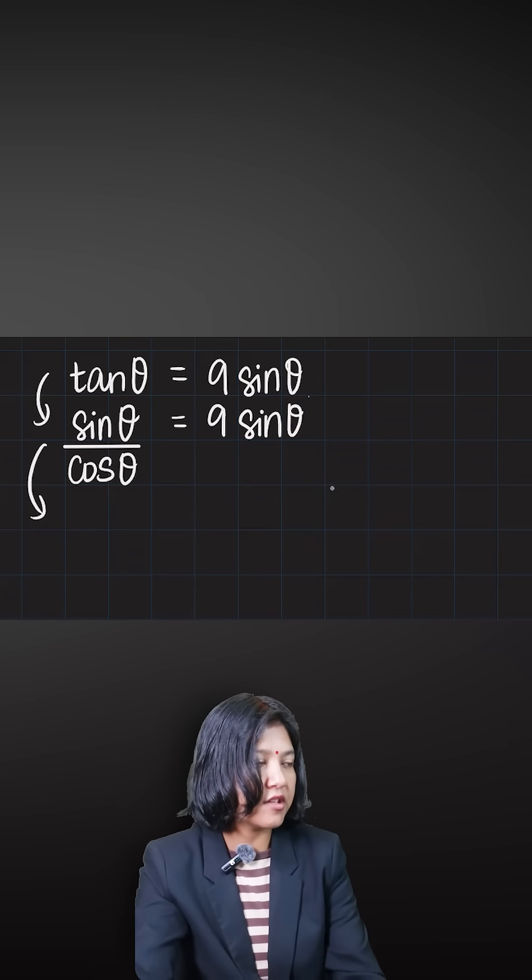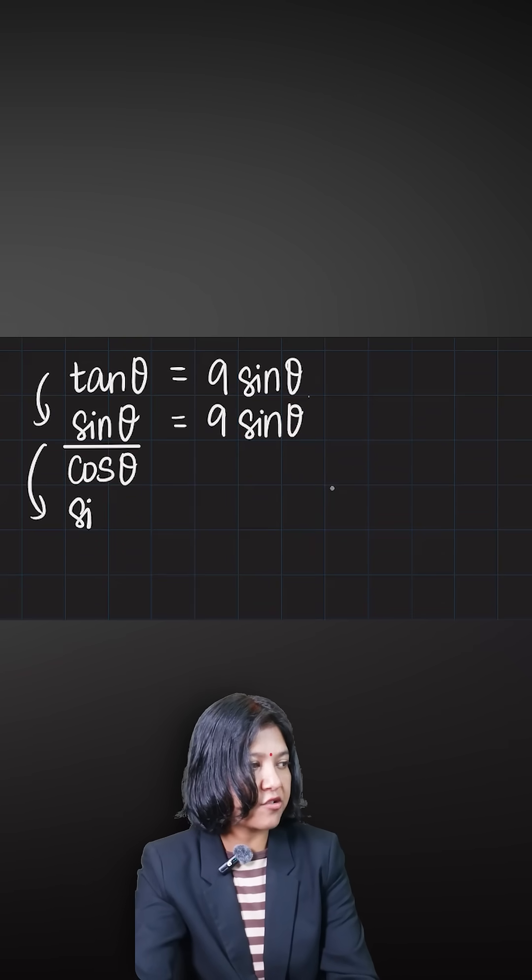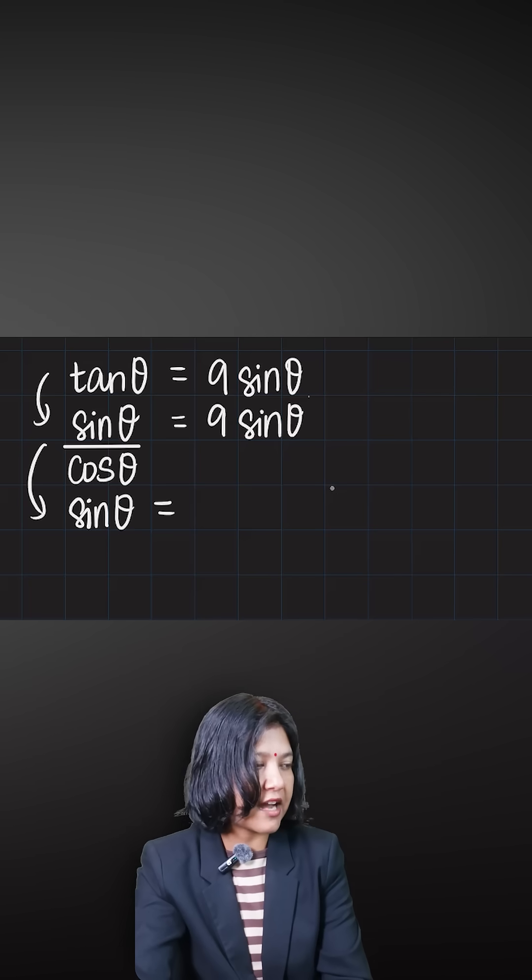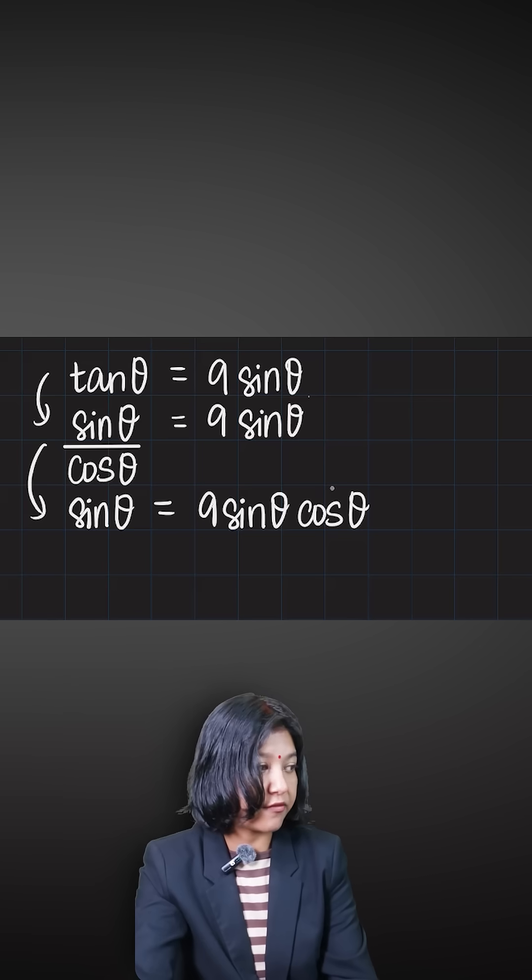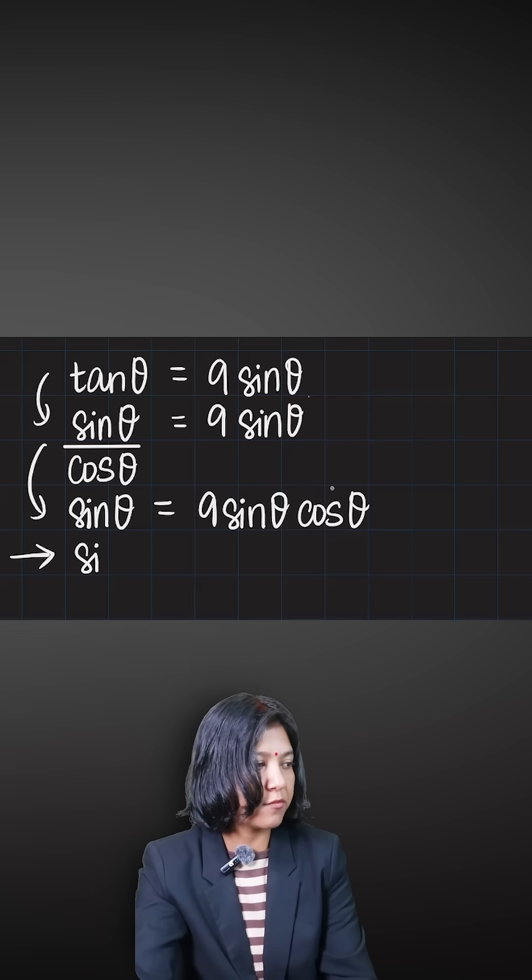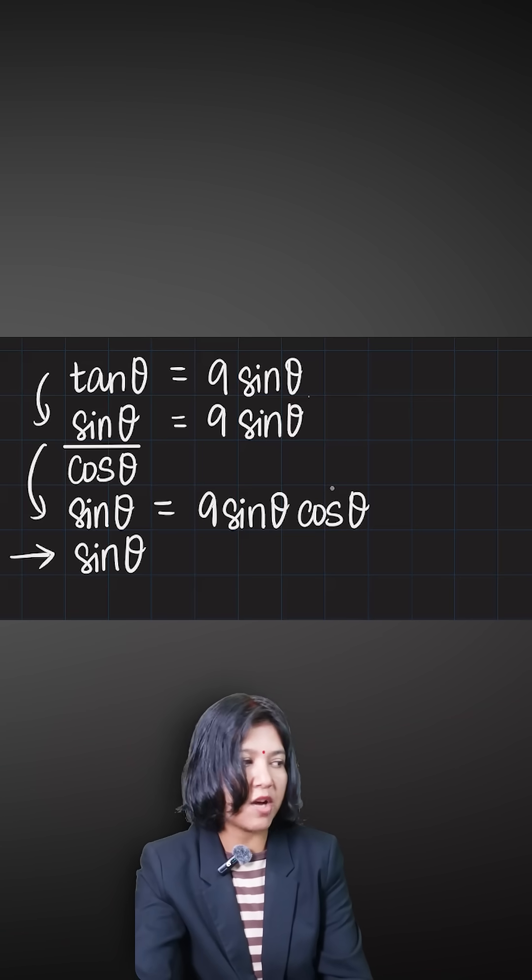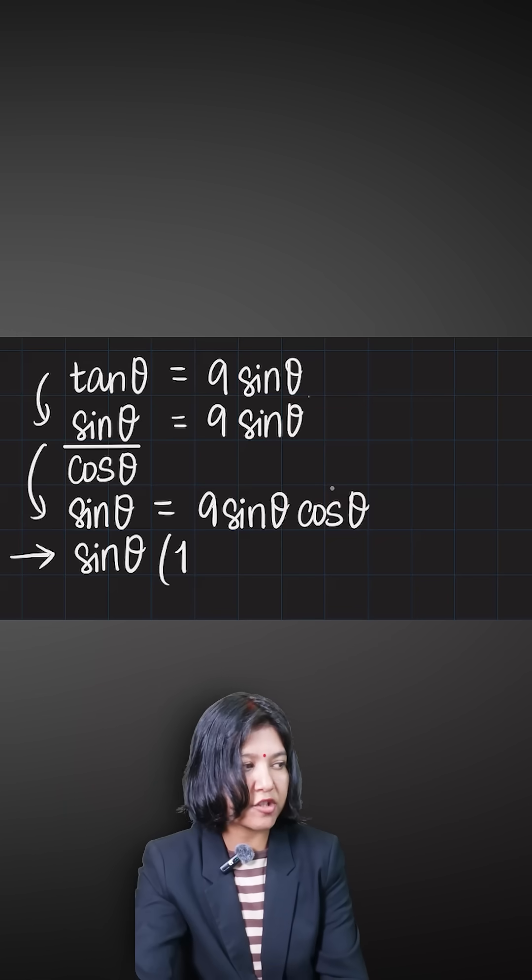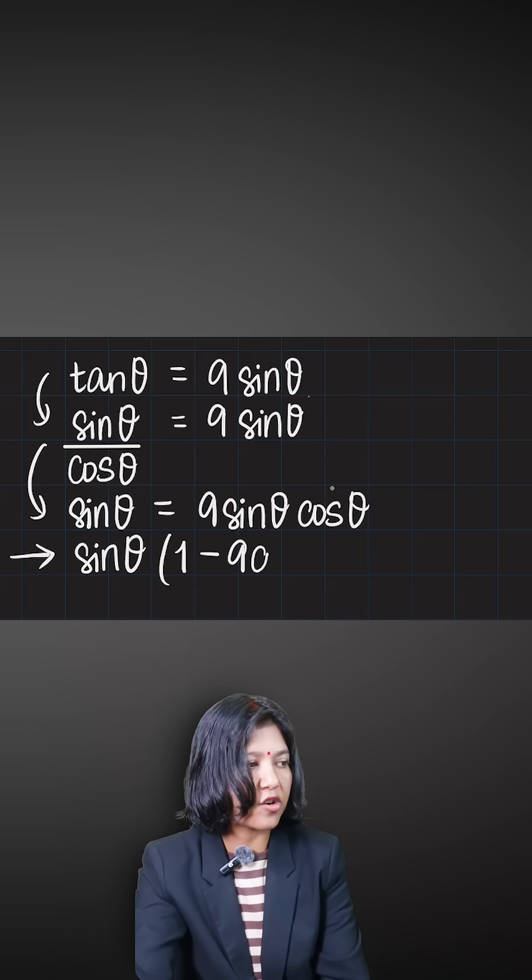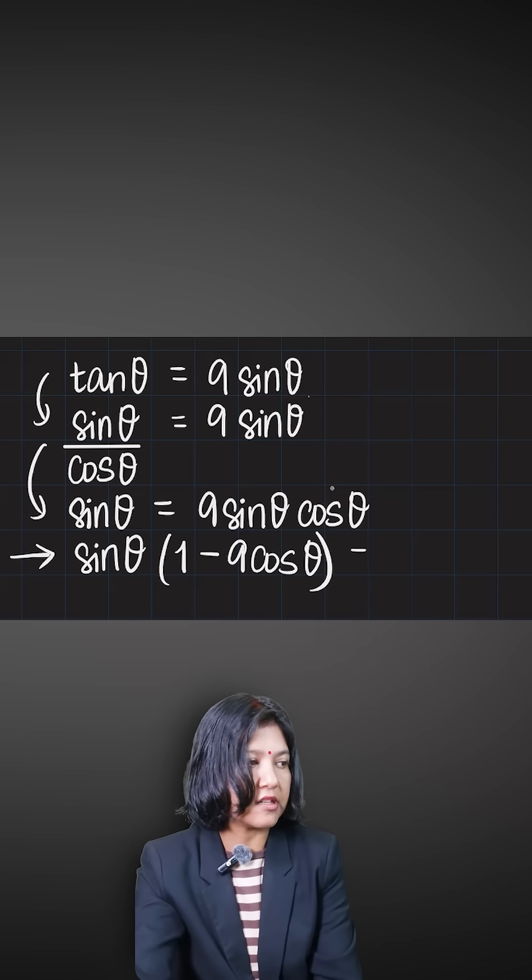Instead, cross multiply and you get sin theta equals 9 sin theta cos theta. You can factorize - when you bring both terms to this side, sin theta comes out common, giving you sin theta times (1 minus 9 cos theta) equals 0.